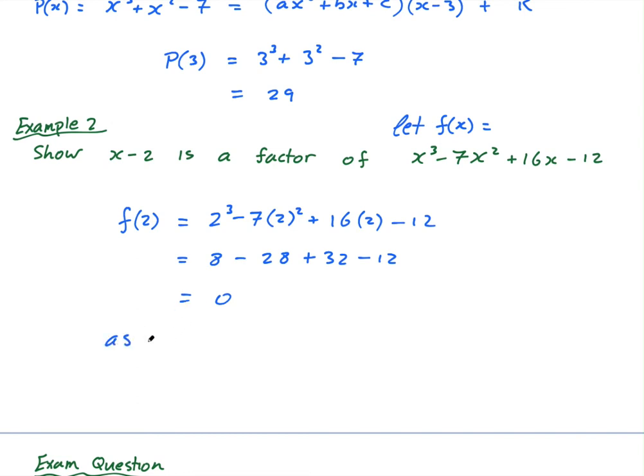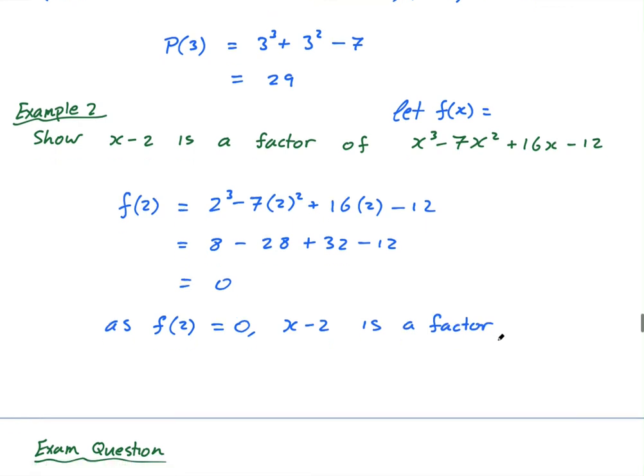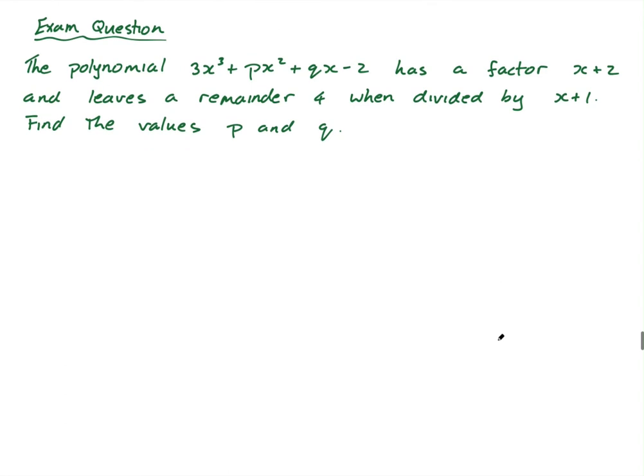So as f(2) equals 0, I'm just going to write a conclusion, as f(2) equals 0, x minus 2 is a factor. Done. Easy. Last question, last but not least, this is straight from a past paper.